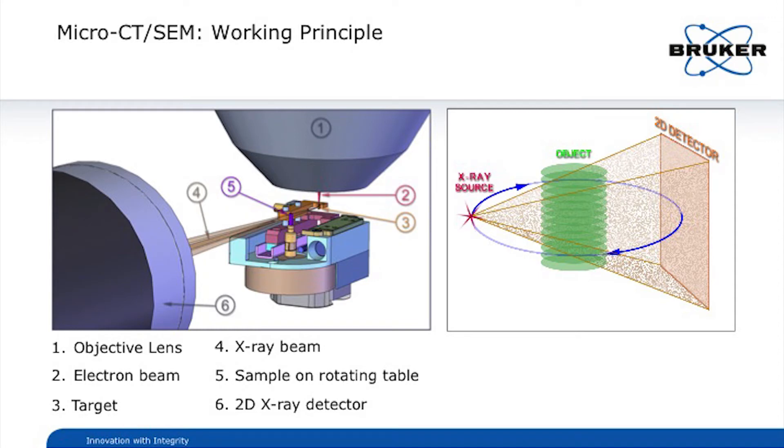What you're doing is shooting your electron beam down on a metal target. X-rays are being produced and these are going to go through the sample and will be detected by the camera, by the CT camera that is attached to the SEM.